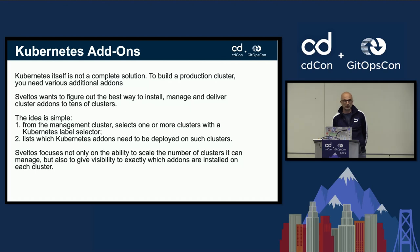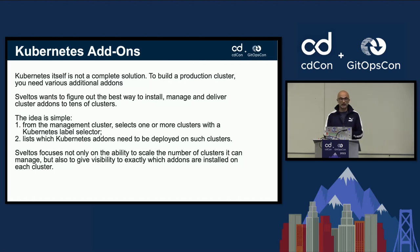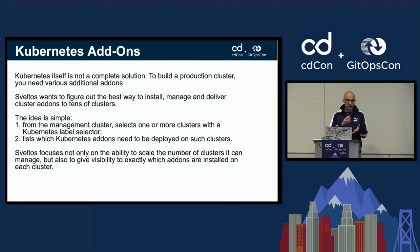Sveltos wants to be a solution to easily manage and deliver cluster add-ons to tens of clusters. We started this project where we're using Cluster API, so there is a management cluster, and from this cluster all the managed clusters are reachable. The idea behind Sveltos is that you install Sveltos in the management cluster, then use a Kubernetes label selector to select a set of clusters, list all the add-ons you want deployed, and let Sveltos do the work.